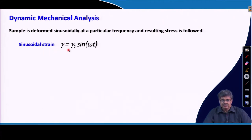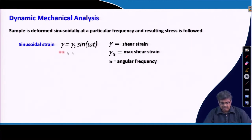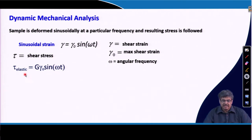Other types of deformation can also be applied sinusoidally to the samples. If we apply this strain as a function of sine of angular frequency and time, where this is the maximum strain experienced by the sample — the maximum shear strain — and omega is angular frequency. We can use other strains as well, like tensile strain. The corresponding shear stress can then be expressed accordingly.